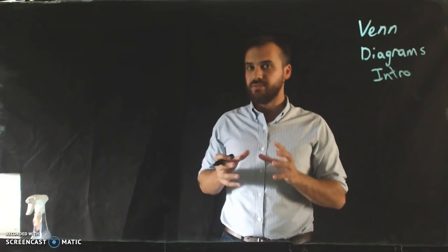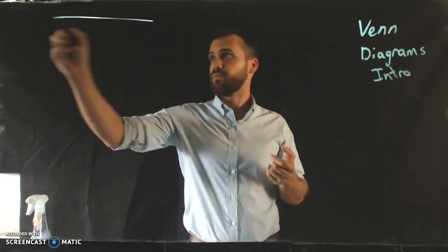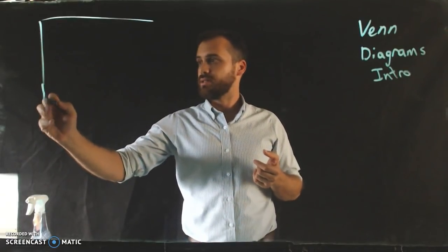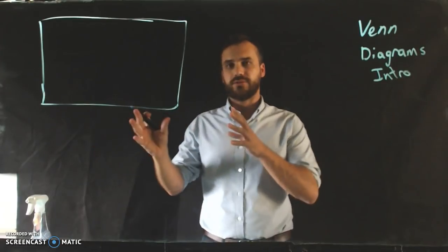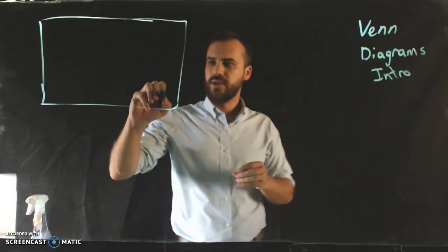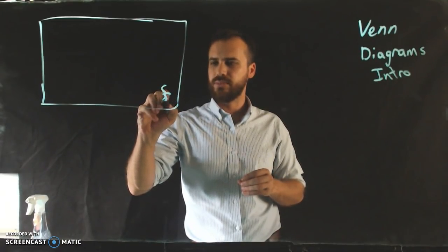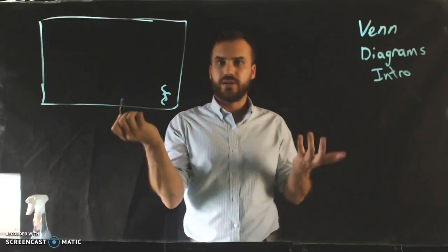The basic Venn diagram starts with, well, always starts with the same thing. A nice large-ish rectangle. And that rectangle represents something. Now, I always suck at drawing this. You should Google this symbol because it's really cool, but I can't draw it.